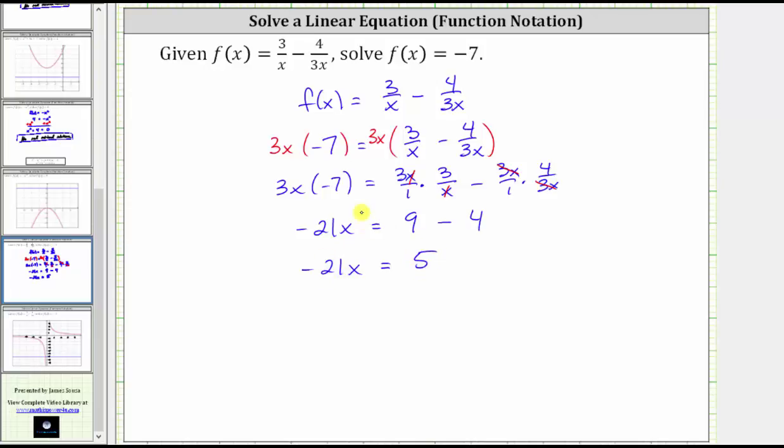And now to solve for x, we divide both sides by -21. Simplifying, -21 divided by -21 simplifies to 1. One times x is x. We have x = -5/21.